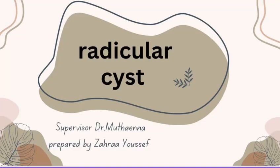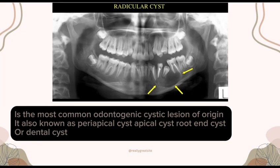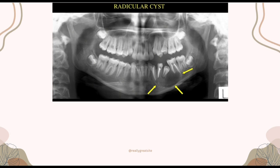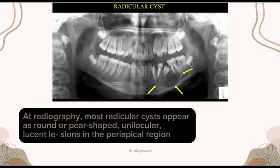A radicular cyst is the most common odontogenic cystic lesion of inflammatory origin. It is also known as a periapical cyst, periapical periodontal cyst, root end cyst, or dental cyst. In clinical examination and radiography, most radicular cysts...